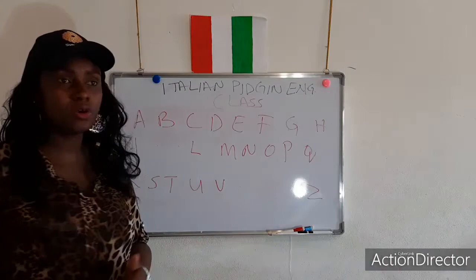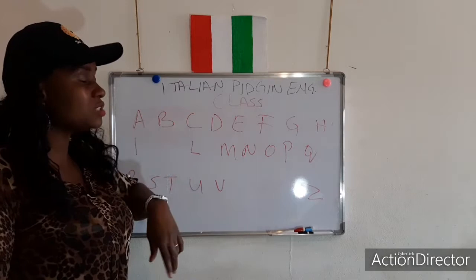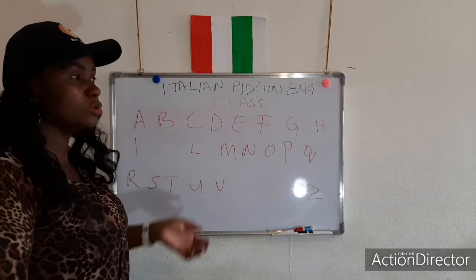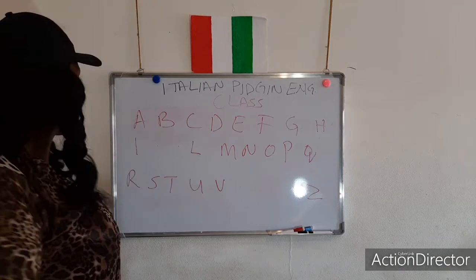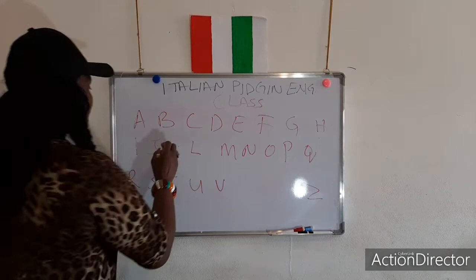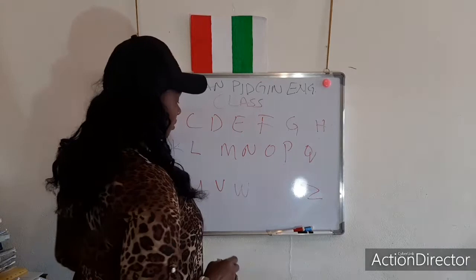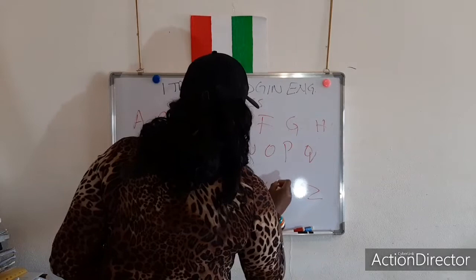They borrowed some letters. Like you borrow a bicycle from your friend, from your neighbor, or borrow something — I say they went to borrow from Latin. The same place as English borrowed from. After V, they can borrow W — where they call W. They can borrow X, they can borrow Y. I will tell you how they took those columns. It doesn't complete 26. It only completes 21 — not like the one used for Nigeria.